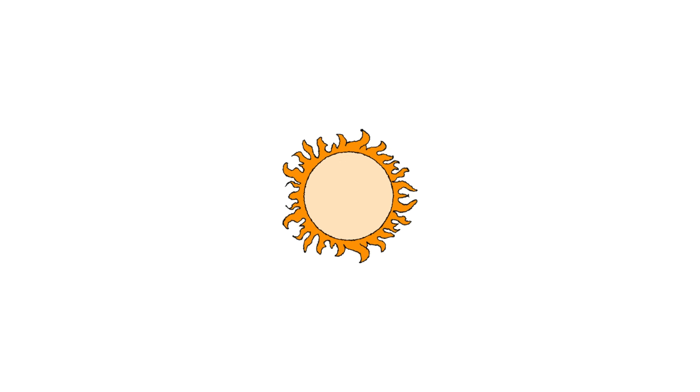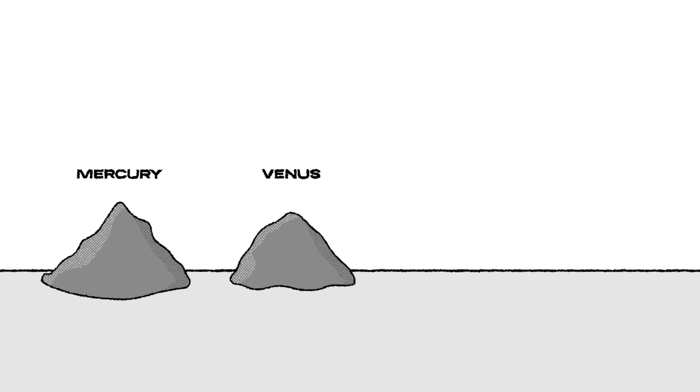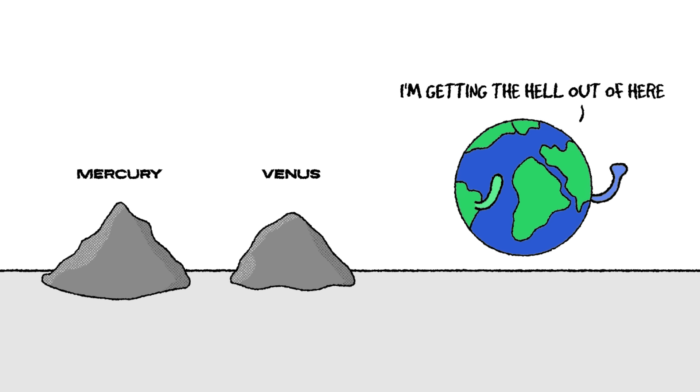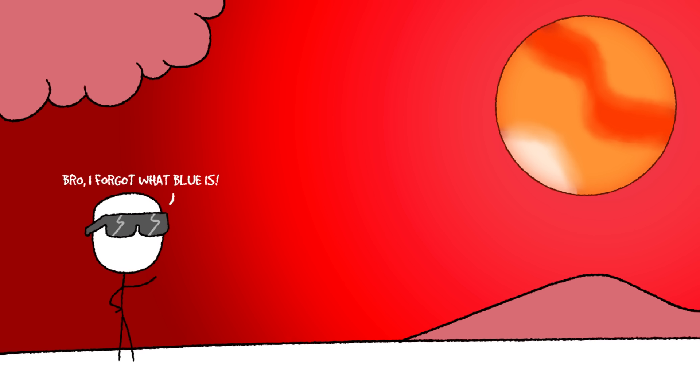If we replaced our sun with Arcturus, Mercury and Venus would be completely incinerated. And Earth? We might just barely survive, but only if we moved further out. But even if we did, Earth wouldn't feel the same. The sky would glow a deep, eerie red all day long, making every landscape look like it was straight out of a Martian horror movie. No more bright blue skies, no more white clouds. Just red everywhere.